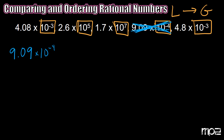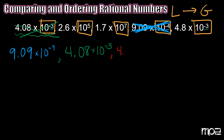I'll cross that out so I don't reuse it — that's one down. Next, I notice two numbers that both have negative three as an exponent. Comparing their rational numbers just like before, I notice that 4 and 8 tenths is bigger than 4 and 8 hundredths. So the smaller number is 4 and 8 hundredths, and I write 4 and 8 hundredths times 10 to the negative third power and cross it off. Next up is 4 and 8 tenths times 10 to the negative third power.